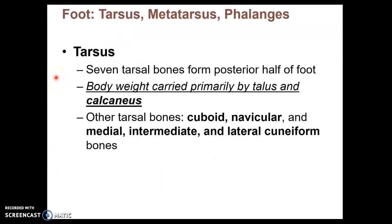On each leg, there are seven tarsal bones, which is your ankle and the posterior half of the foot. These are your seven tarsal bones: the cuboid, navicular, and then there's three cuneiforms, which we'll see on an image in a little bit.